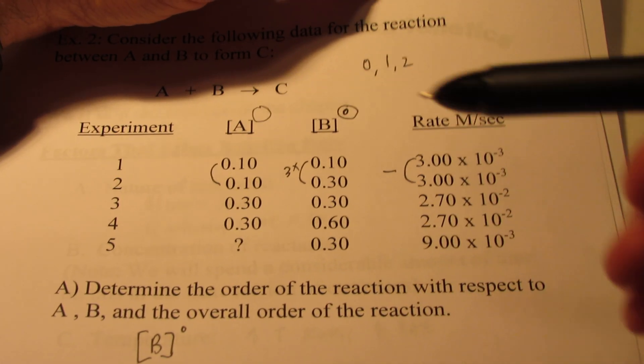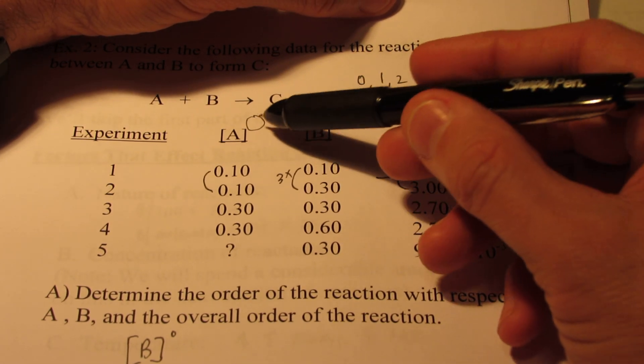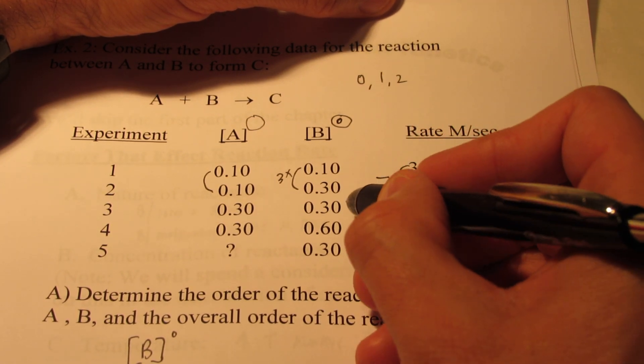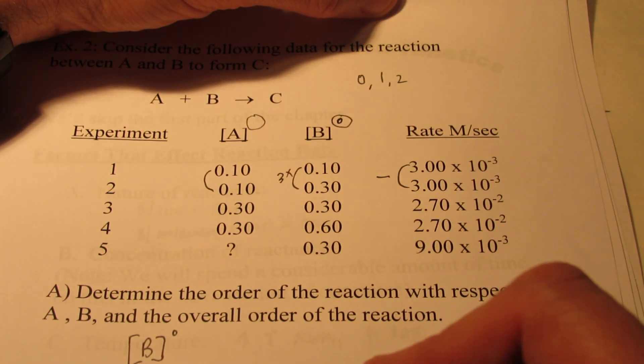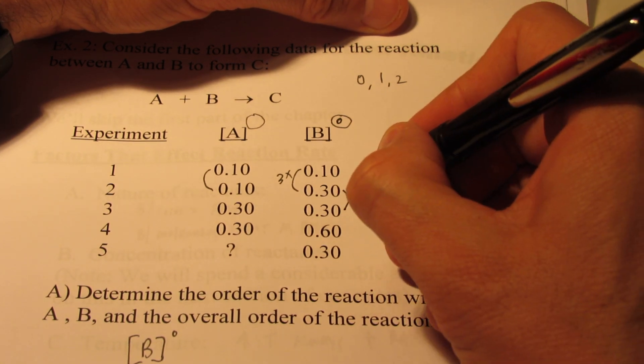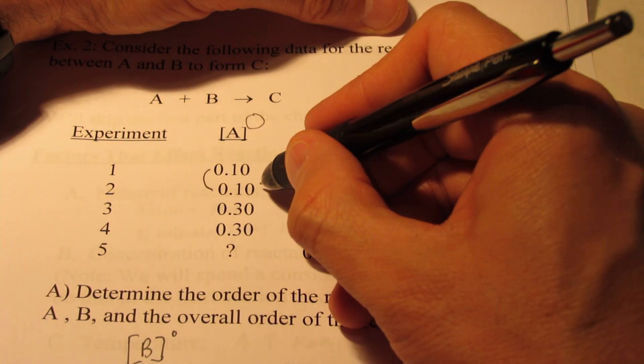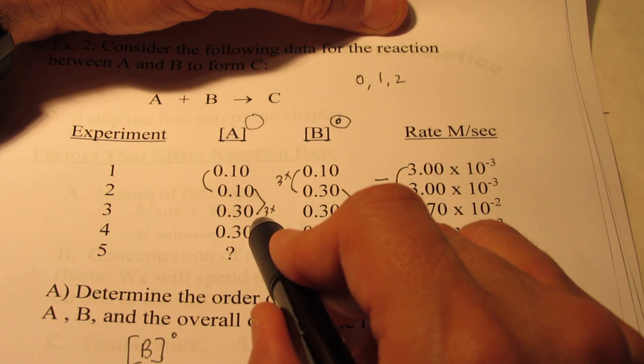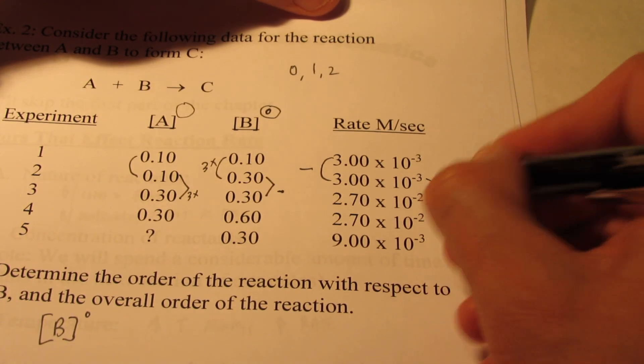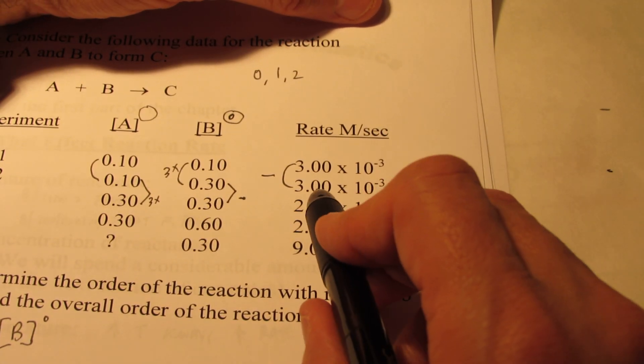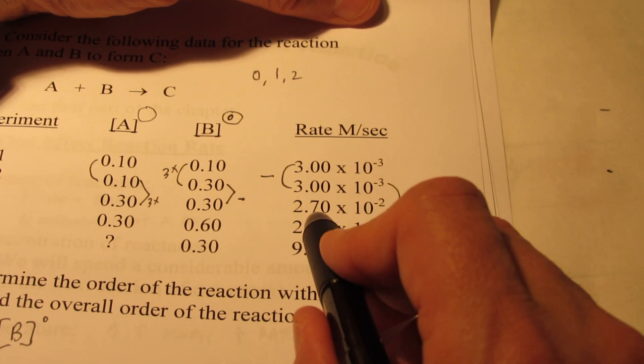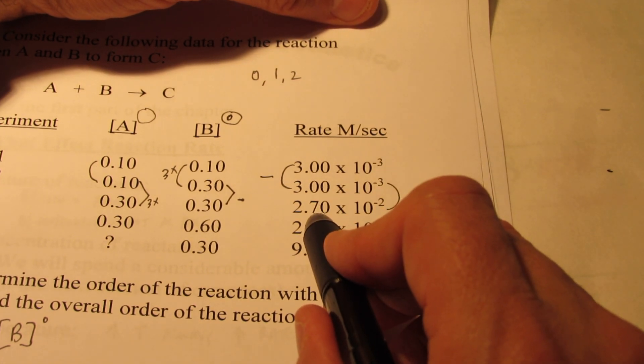Well, take a look at the data and see which experiments we would use to find the order for A. Think about it. If you said the second and third experiments, that's a good choice. Because in the second and third experiments, B was held constant. A, however, tripled. So the changing of the rate will be because of what I did to A, not because of what I did to B. So let's see what happens. When I tripled this, the rate goes from 3 times 10 to the negative third, which is 0.003, to 2.7 times 10 to the negative second, which is 0.027.